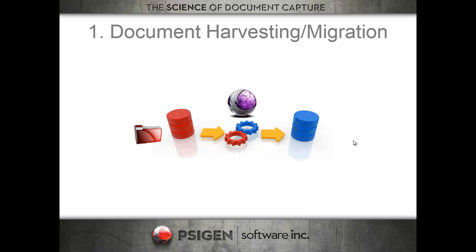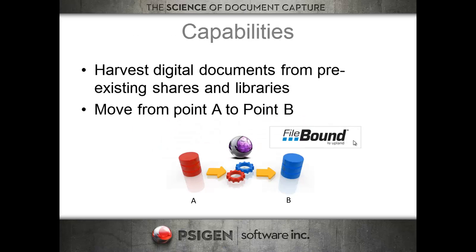I'm going to talk briefly about five different scenarios where we're seeing market growth for our partners. The first one is document harvesting and migration. Document harvesting is the ability to consume file folders worth of documents and images, process them, and post them into Filebound — taking content from point A and moving it to point B. This harvesting capability is enabled in every license of SciCapture; it's included in the core functionality of the product.